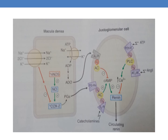Here you can see the mechanism. Sodium depletion upregulates NOS and COX-2 in the macula densa to enhance the production of prostaglandins. These prostaglandins and catecholamines stimulate adenylyl cyclase, leading to increased production of cyclic AMP, which increases renin release.